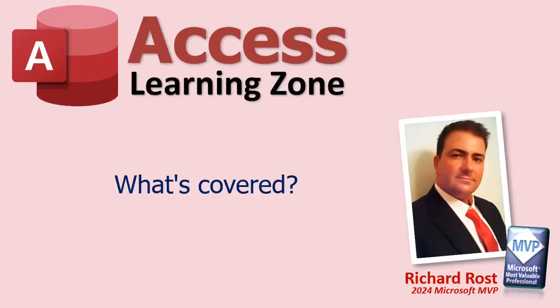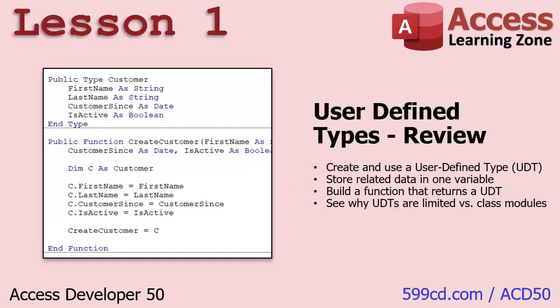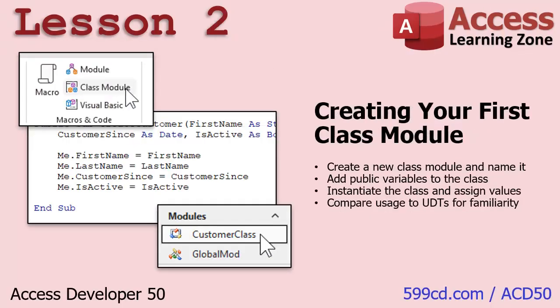Let's take a closer look at exactly what's covered in today's class. In Lesson 1, before we get into class modules, we're going to review user-defined types, which we did cover initially in Developer 40. We'll go into a little more detail and talk about exactly why user-defined types are limited compared to what class modules can do. In Lesson 2, we're going to create our first class module — create it, give it a name, add public variables, instantiate the class, assign values, and compare it to user-defined types.